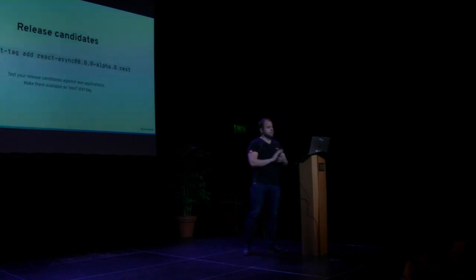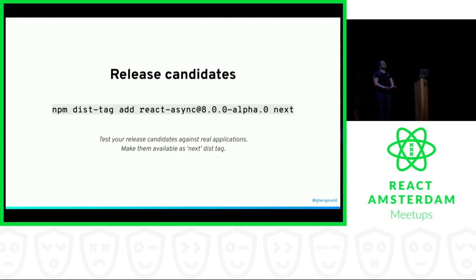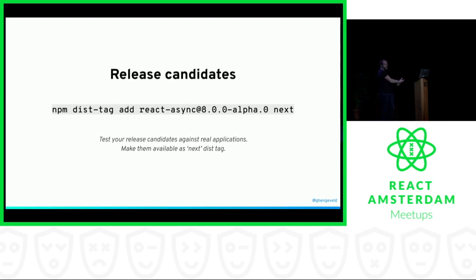One thing I learned and started doing - though that's still not enough - is working with release candidates. Essentially a release candidate is like: I have done all this work and I want to release this now, but let's take a step back and do an alpha, beta, or RC release. Release that, then start using that particular version in various projects. Ask people to test it in their application. It takes a couple extra weeks, but it saves me from having to circle back later to fix mistakes.